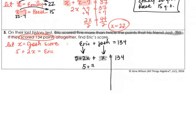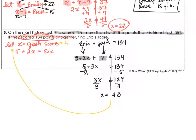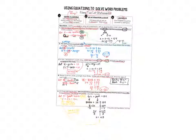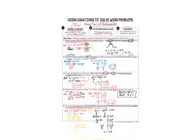Let's combine like terms and solve. Subtract the 5 on both sides — 3x is equal to 134 minus 5, which is 129. Divide by 3, and x is equal to 43. Take it back to the let statement — we just found x, which is Josh's score. And Eric scored 5 more than 2 times Josh's score: 2 times 43 is 86, and 5 plus 86 is 91. So Josh scored a 43, and Eric scored a 91. And that is your lesson on using equations to solve word problems that have two let statements. Thanks for watching!